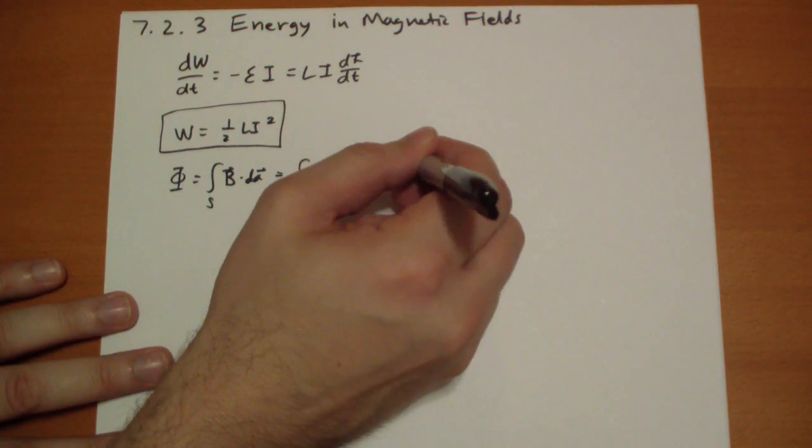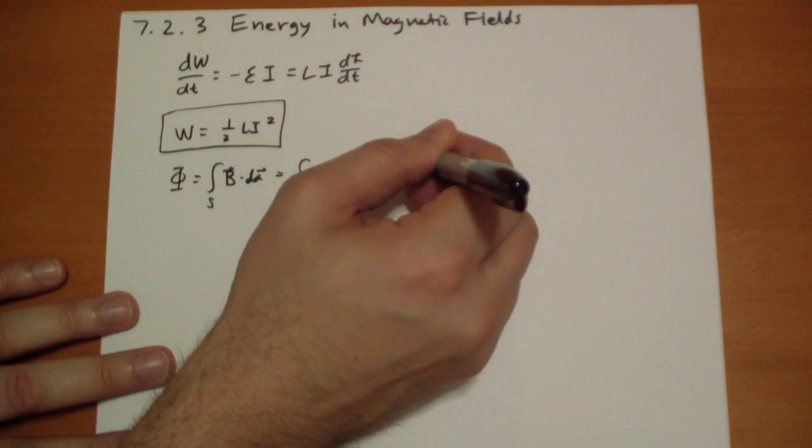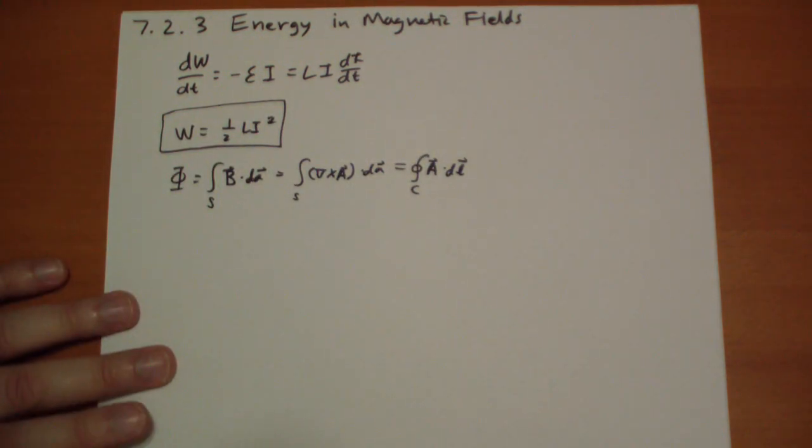And so, applying Stokes' theorem, so we have some closed loop over the circuit of A vector dot dL vector. That was fun.